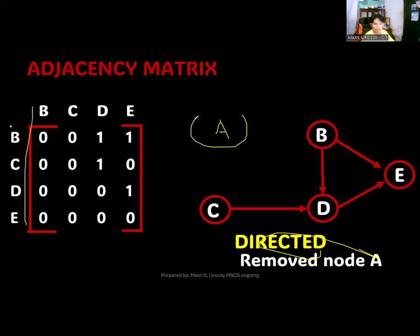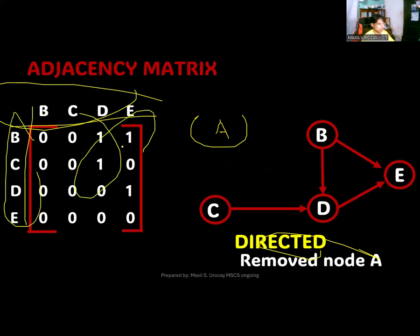Since you will remove node A and it was being removed here, automatically you remove the row and the column for that one. The vertices being left here are B, C, D, and E. That will be your adjacency matrix when you transform or remove node A already. That's the end of our video for the deletion operation using the adjacency matrix.